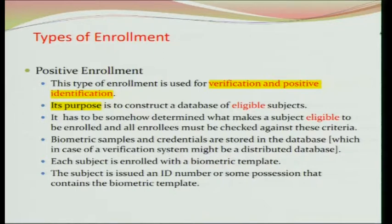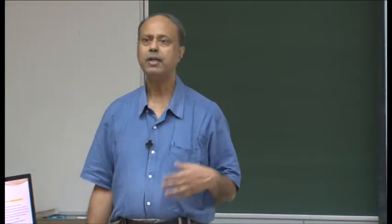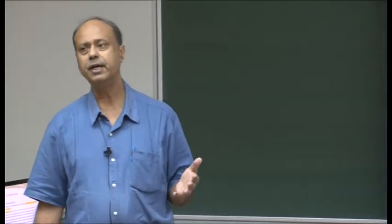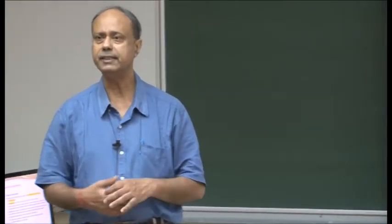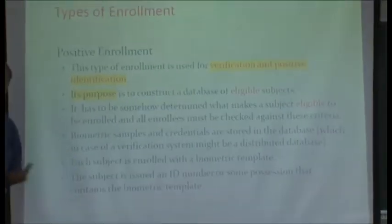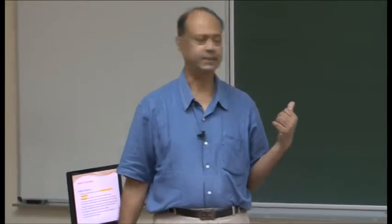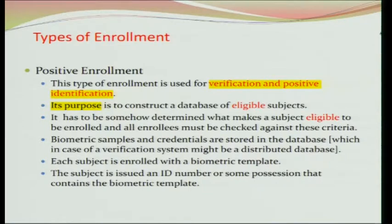There are two types of enrollment: positive enrollment and negative enrollment. In positive enrollment — useful for verification and positive identification — you enter all eligible people into the database. Eligibility is defined by criteria: income less than a threshold, below poverty level, citizenship of India, and so on. The subject comes with that information, somebody verifies it, and if the requirement is satisfied, the subject is allowed to provide biometric data and gets an ID.